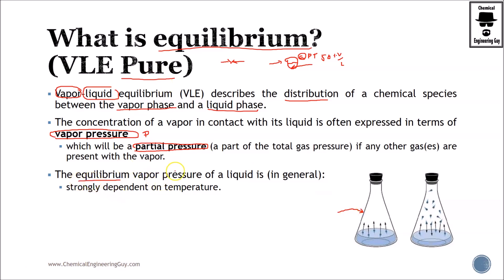Now the equilibrium vapor pressure of a liquid is generally strongly dependent on the temperature. What does this mean? Let's say that at temperature one, let it be 50 celsius, our partial pressure is one atmosphere. But if we increase the temperature, let's say to 100 celsius, the pressure will increase to, let's say, two atmospheres and so on. As you increase temperature, the pressure increases.